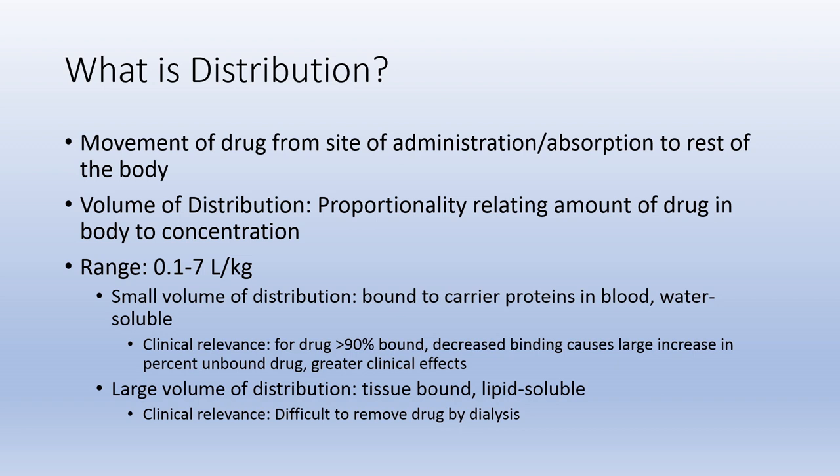What is distribution? Distribution is the movement of drug from the site of administration or absorption to the rest of the body. The volume of distribution is a proportionality relating the amount of drug in the body to the concentration and is not related to a physiologic volume. The range can be somewhere between 0.1 and 7 liters per kilo. Drugs with a small volume of distribution are generally bound to carrier proteins in blood and are more water-soluble. For a drug which is greater than 90 percent bound to proteins, decreased binding from 90 percent to 80 percent causes large increases in unbound drug and greater clinical effects, since the free drug is the active drug. Drugs with a large volume of distribution are generally tissue-bound and lipid soluble, and it is very difficult to remove these drugs by dialysis.